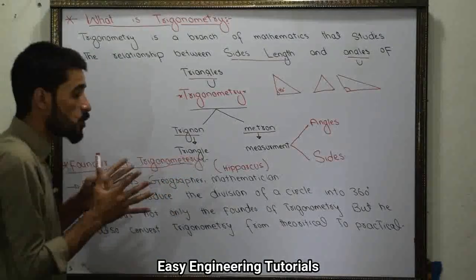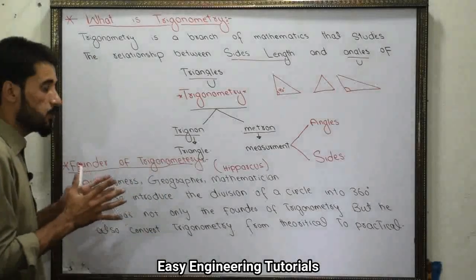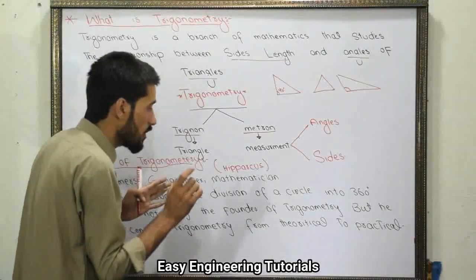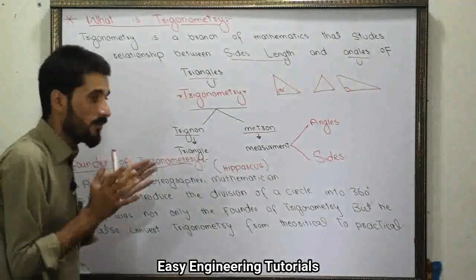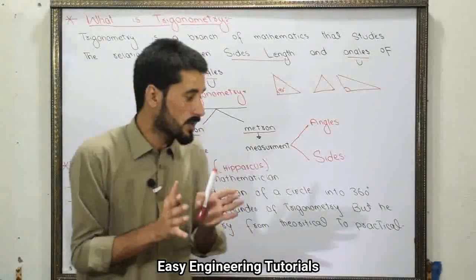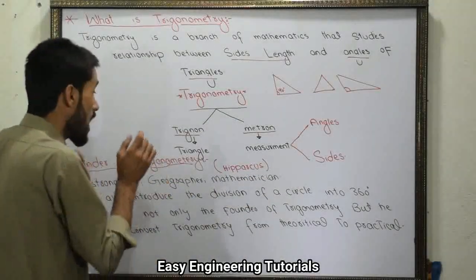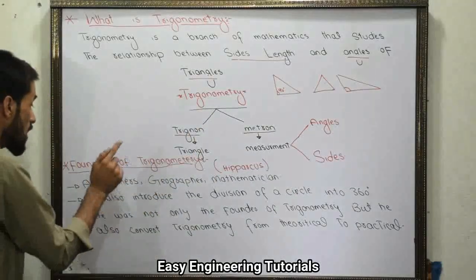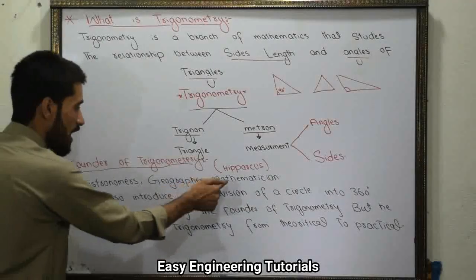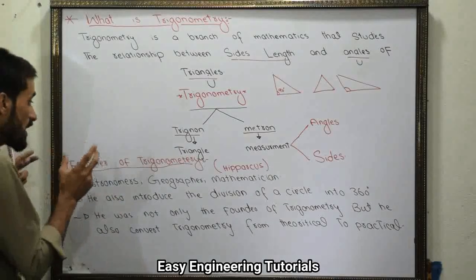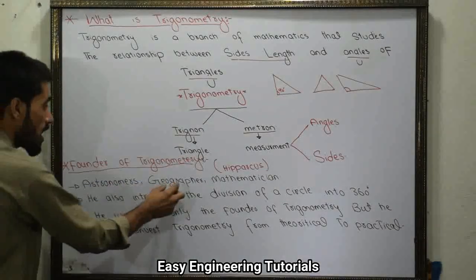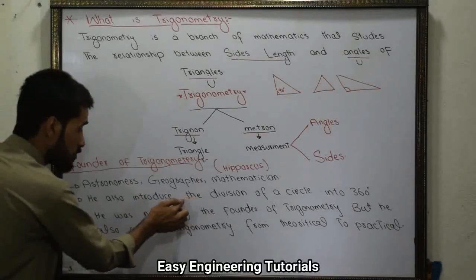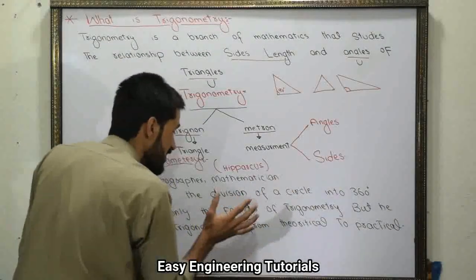Who is the founder of trigonometry? You should know that Hipparchus is the founder of trigonometry. Hipparchus was not only the founder of trigonometry but he was also an astronomer, a geographer, and a mathematician. Is ke alawa, he also introduced the division of a circle into 360 degrees.